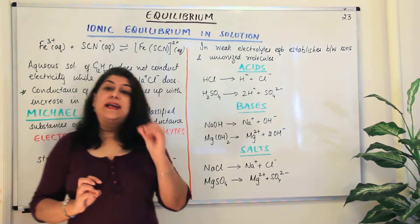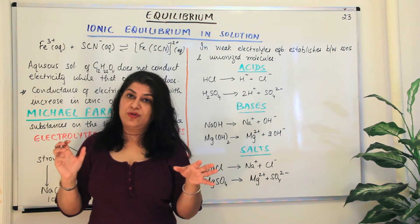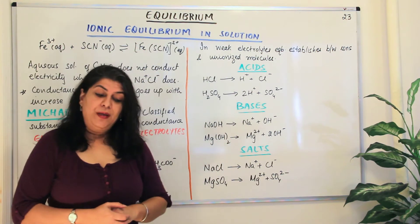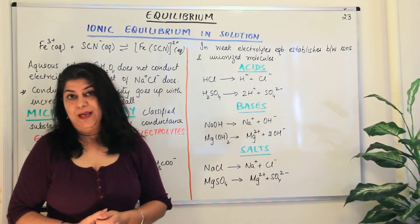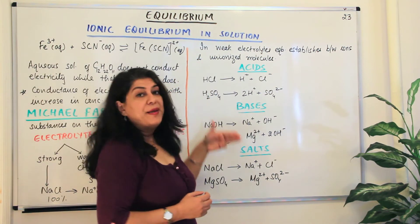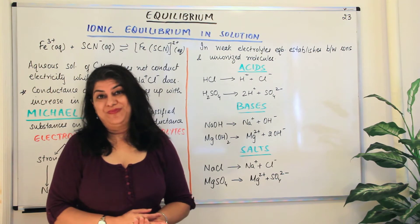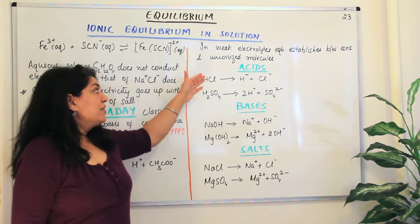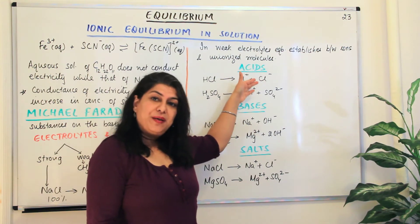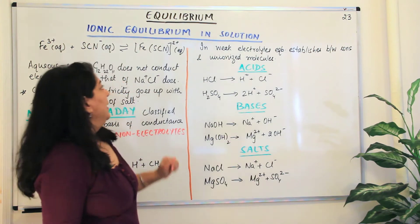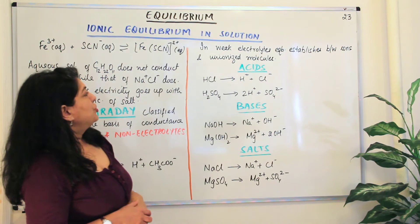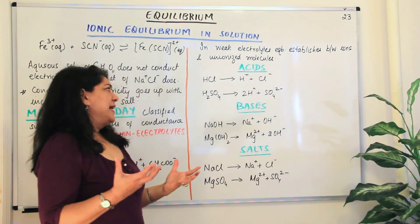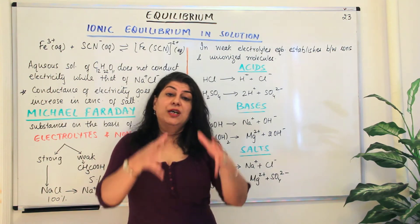Now that you understand that electrolytes are of two types — weak electrolytes and strong electrolytes — weak electrolytes are the ones which have equilibrium. This is just an introduction to ionic equilibrium in solution. The types of ionic equilibria we will be studying involve three classes of compounds — acids, bases, and salts — which produce ions in solution. In the consecutive videos, we are going to study ionic equilibria in solution: specifically equilibrium involving acids, bases, and salts. In weak electrolytes, equilibrium establishes between ions and un-ionized molecules.